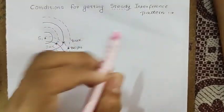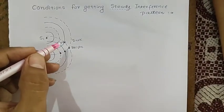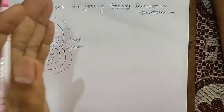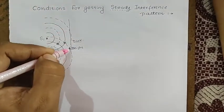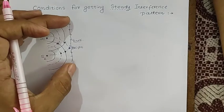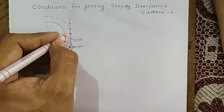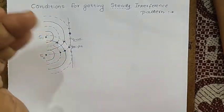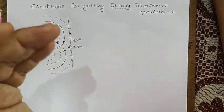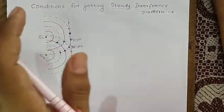Now we learn the conditions for getting a steady interference pattern. A steady pattern means if a point is bright, it remains constantly bright, and if a point is dark, it remains constantly dark — a stable pattern. For that, some conditions are required.